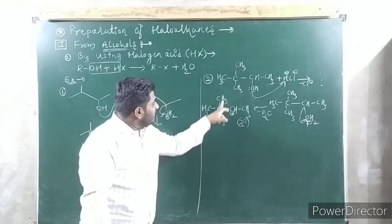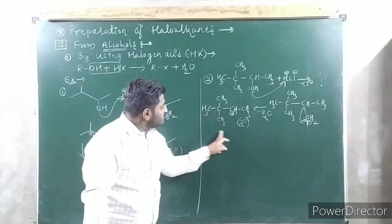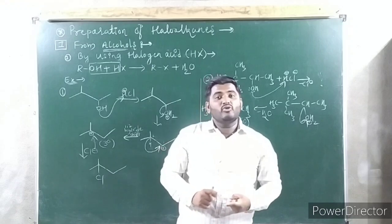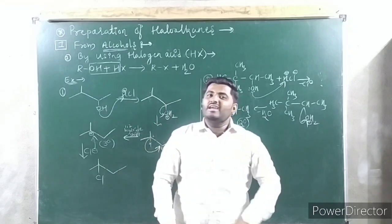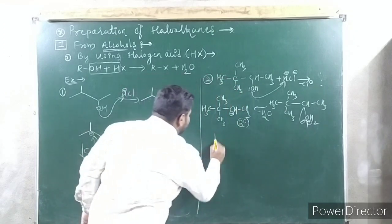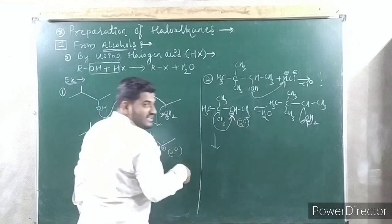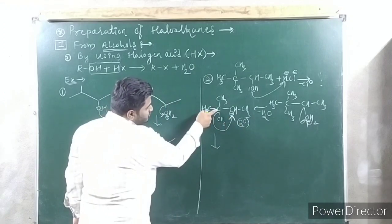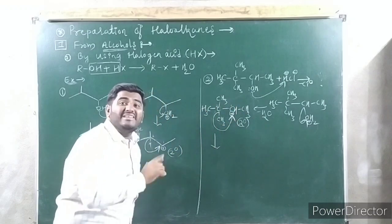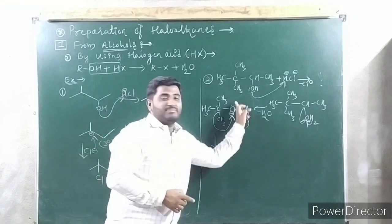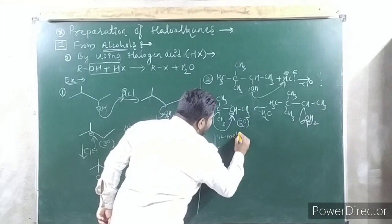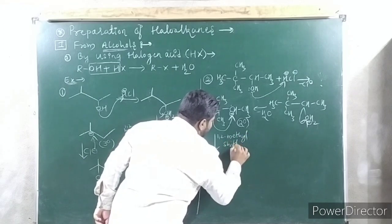Look at the neighboring carbon: it has three to four substituents. So if you shift the methyl group, it becomes a tertiary carbocation. Secondary or tertiary — tertiary is more stable. Therefore, a methyl shift takes place. This is called a 1,2-methyl shift, because the methyl is going to shift from this carbon to that carbon.